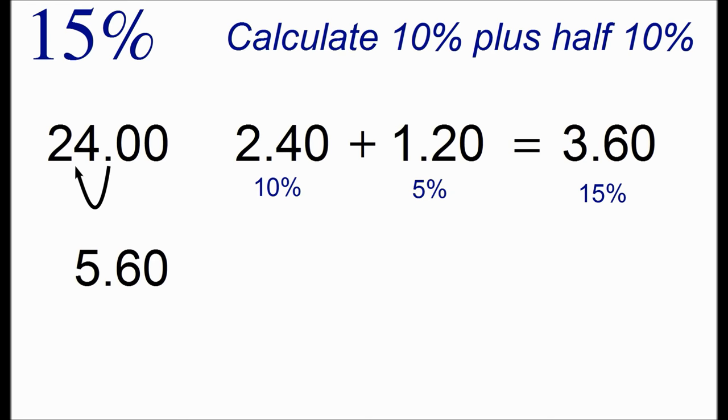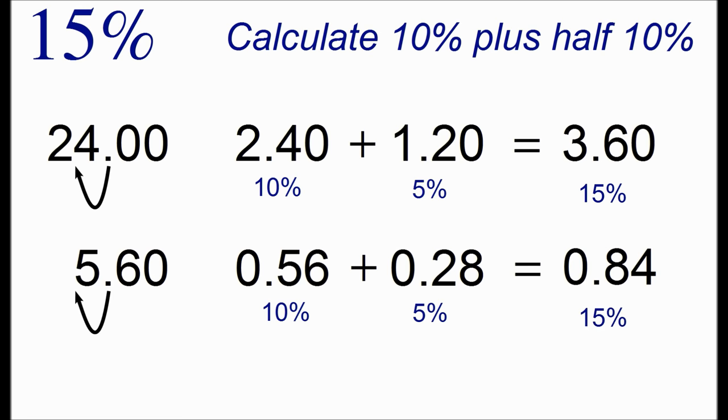For the number 5.6, we calculate 10% by moving the decimal point one spot over and now we have to take half of 0.56 and we can do this easily as 0.28. So to get to 15% we add these two numbers together and we get that 15% is 0.84.